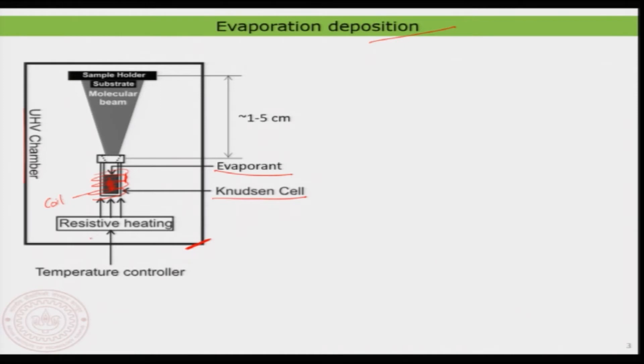Using the coil you can do resistive heating — by controlling the current passing through the coil you can control the temperature, and there is always a temperature controller associated with the heating. The front part of the Knudsen cell has a very small opening shaped like a cone, so molecules or atoms evaporated from the Knudsen cell form a molecular beam. A beam means the atoms and molecules are separated from each other — they are not coming as coupled. This is extremely important. Once you have the molecular beam, you direct it at the substrate — the surface onto which you deposit your adsorbate.